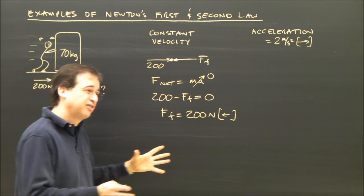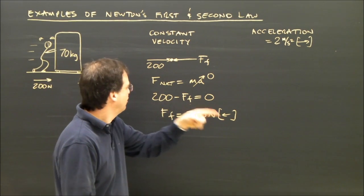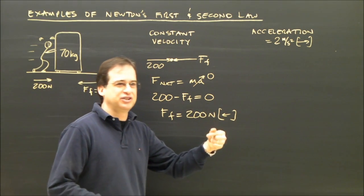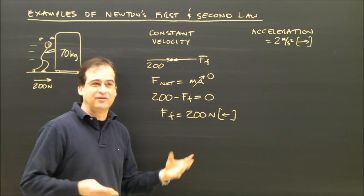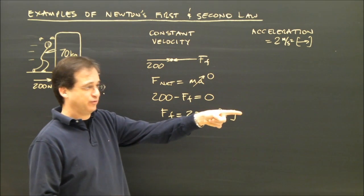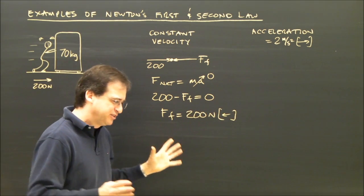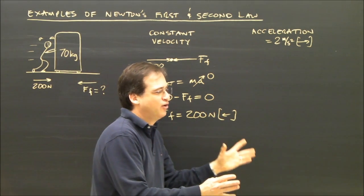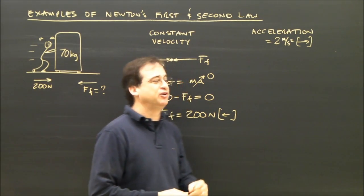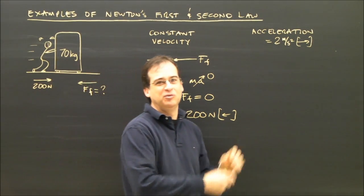I'm going to have to push with 230 newtons so that I've got 230 forward, 200 of friction, I have 30 newtons left over. I have an unbalanced force, the fridge is going to accelerate that way. Once the fridge starts moving, then all I've got to do is push with 200 newtons to cancel out the friction and I will continue moving.